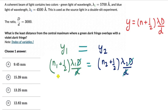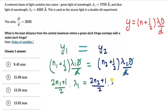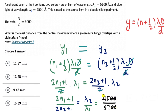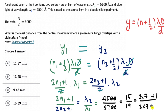Setting the distances equal: (n1 + 1/2) times lambda1 times D/d equals (n2 + 1/2) times lambda2 times D/d. D/d cancels, giving (2n1 + 1) times lambda1 equals (2n2 + 1) times lambda2, or (2n1 + 1)/(2n2 + 1) = lambda2/lambda1 = 4500/5700. Cancelling zeros, this simplifies to 45/57, and both are divisible by 3, giving 15/19.